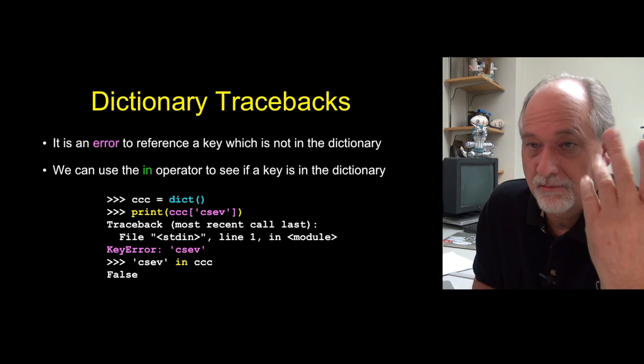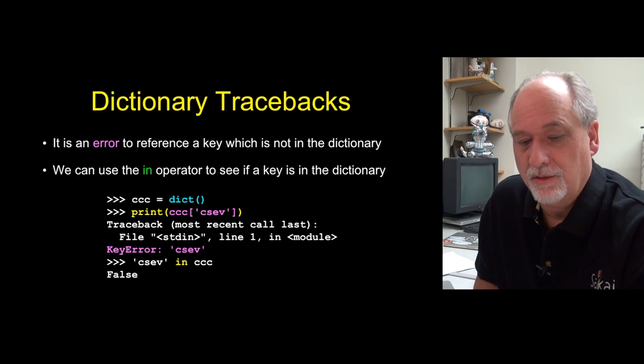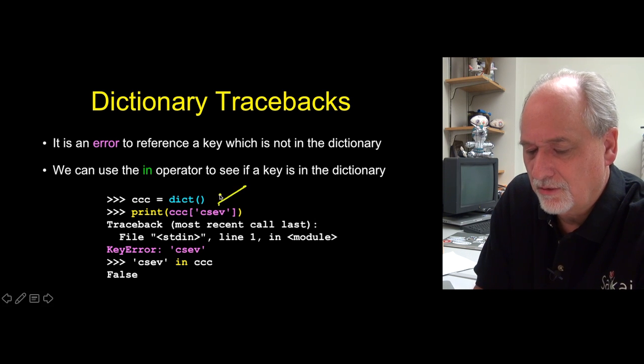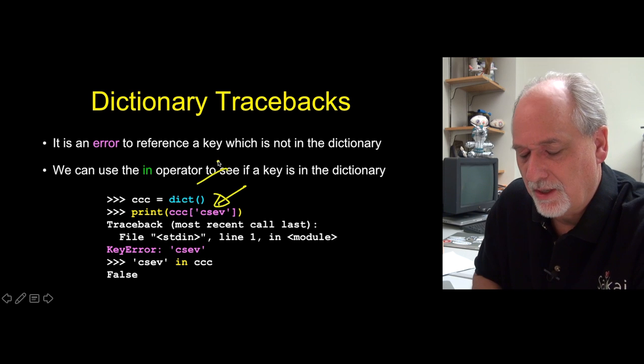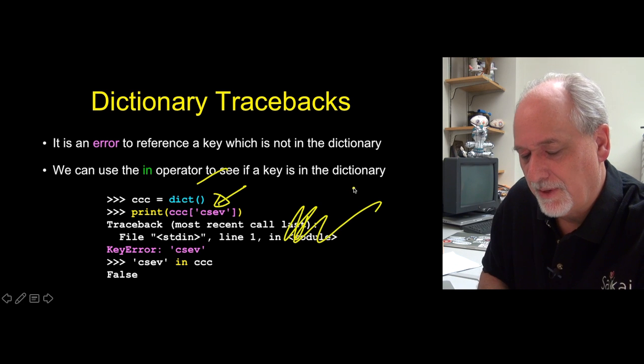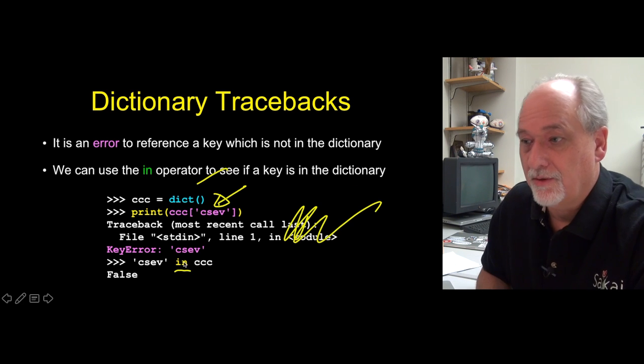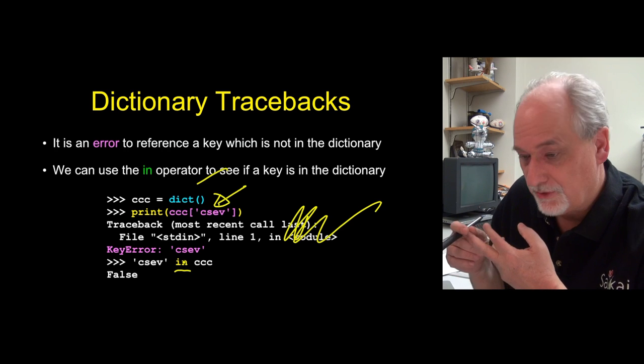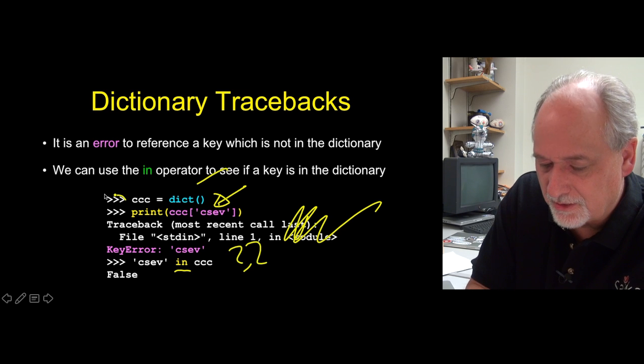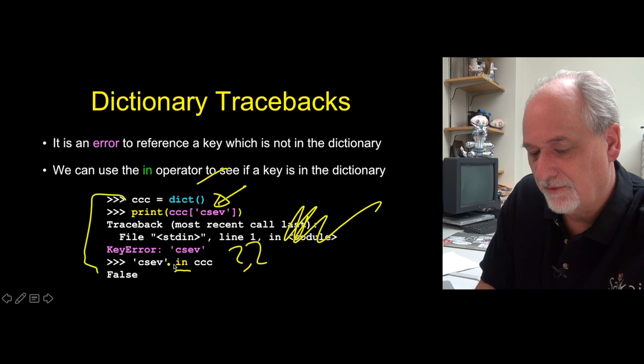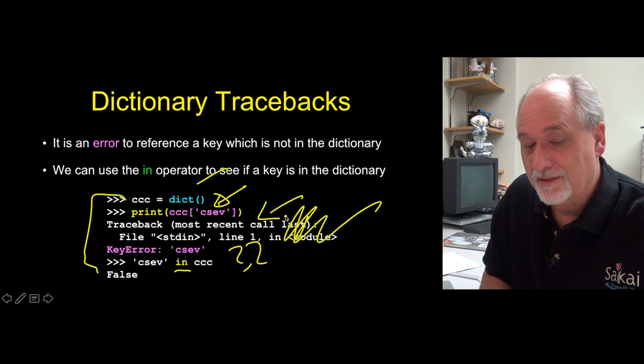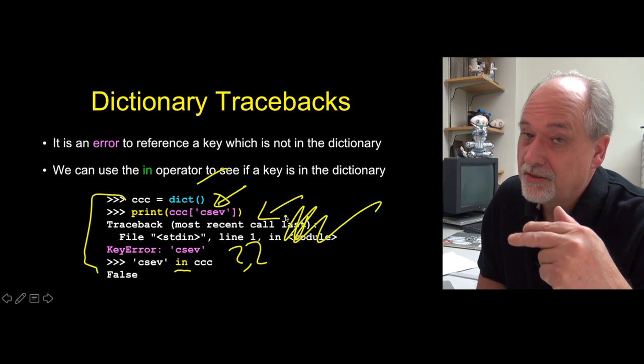The problem with dictionaries is, like everything in Python, there are rules about what you can and can't do. And one of the kind of frustrating things about dictionaries is that you can't just look for a key that doesn't exist. So this is a fresh, brand new dictionary. We do a constructor there, and we print out sub-C-SEV, and boom, it blows up. And that's bad. But we can solve this by the in operator. The in operator we've used in for loops, we've used it in lists, we've used it in strings. So that is a question. It's saying, is C-SEV in CCC? Well, this is this empty one, and so it is no, it is not. C-SEV is not in CCC. And so using this in operator, we can avoid the traceback. We can say, if it's not there, put it in. If it is there, add one to it.